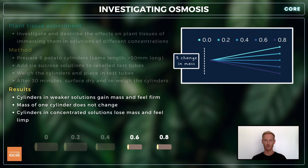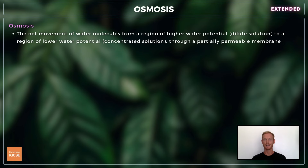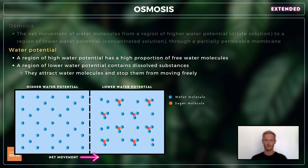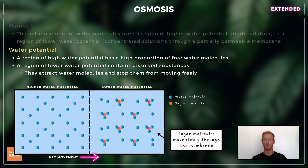That's everything you need to know for the core section, so we'll move on now to look at the extended content. For extended you need to understand osmosis in a little more detail. The Cambridge syllabus requires you to describe osmosis as the net movement of water molecules from a region of higher water potential to a region of lower water potential through a partially permeable membrane. A region of high water potential is one that has a high proportion of free water molecules, while a region of lower water potential contains dissolved substances like sugars and salts that attract water molecules and stop them from moving freely. Water molecules will move in both directions through the membrane, but since the dilute solution has a higher water potential, more will move from the dilute to the concentrated side. The sugar molecules can diffuse in the other direction, however they're bigger and move far slower, so there's still a net or overall movement from the dilute to the concentrated side.